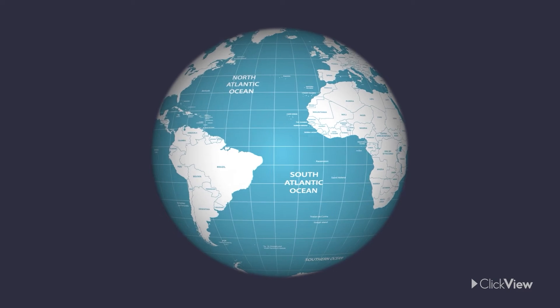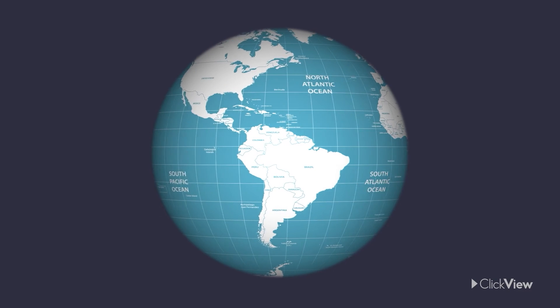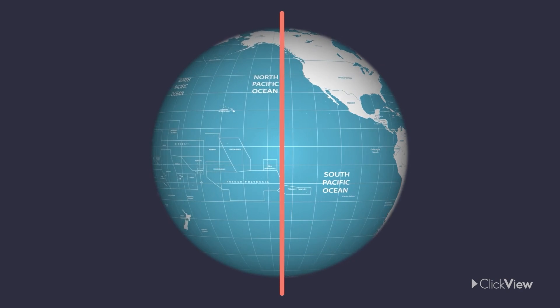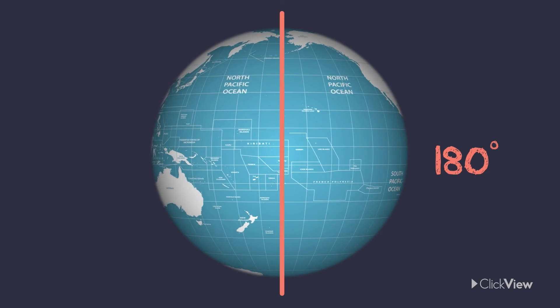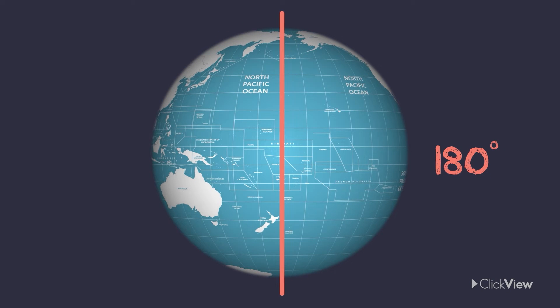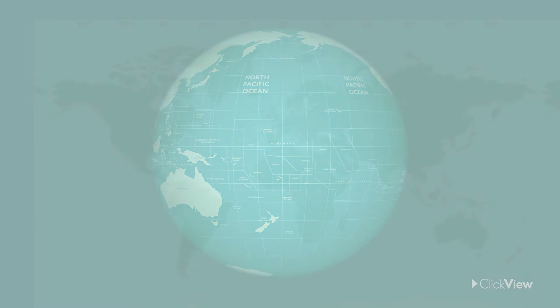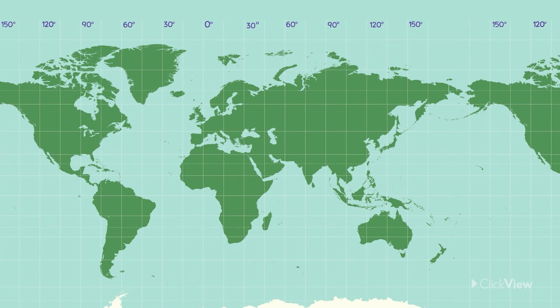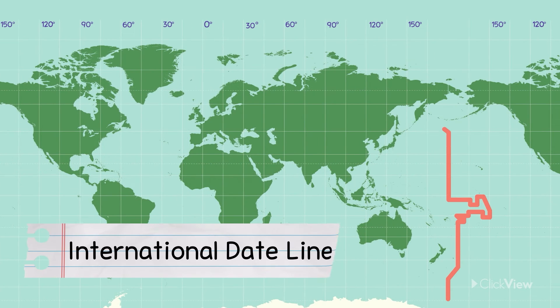On the opposite side of the globe from the prime meridian is the line of longitude at 180 degrees. This 180th meridian is also the basis for the international dateline.